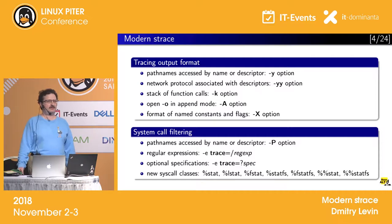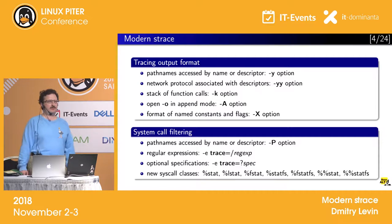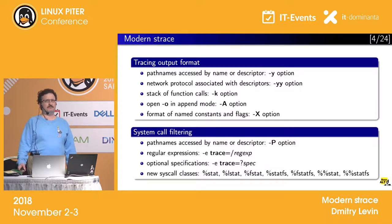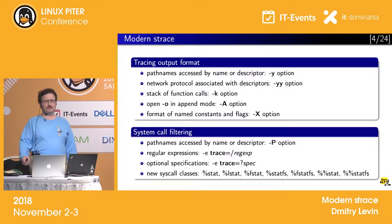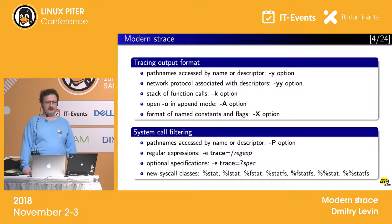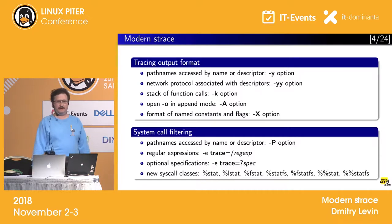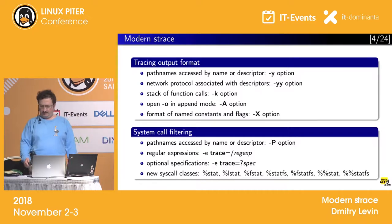We can ask the trace to show names of files which correspond to descriptors. We can see details of different protocols which correspond to sockets. We can see different functions, path names, access by name or descriptor. We can see regular expressions, e-trace, re-champ or optional specifications. We can look at different constants and different syscall classes. It's possible to filter them along the path by descriptors.